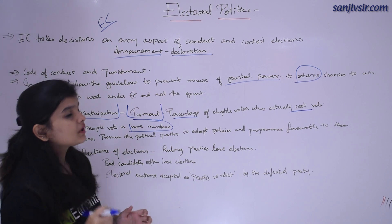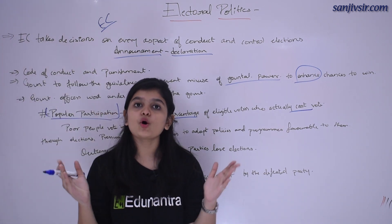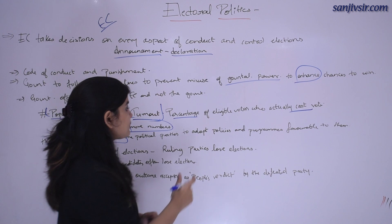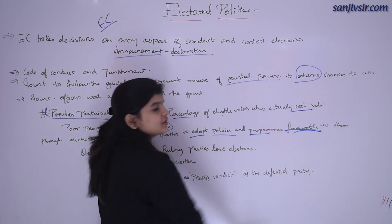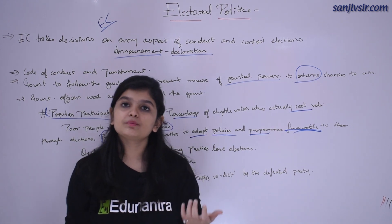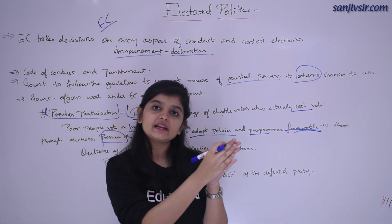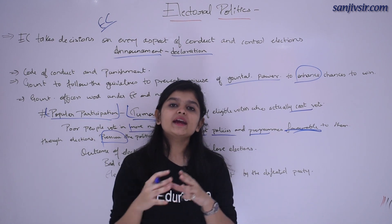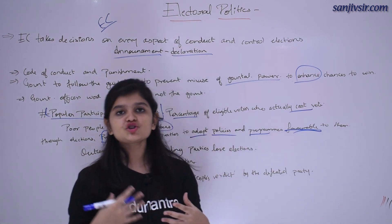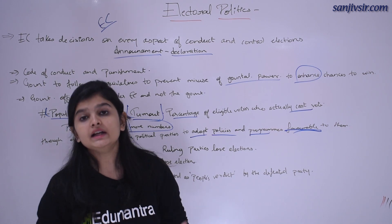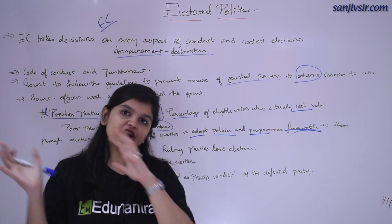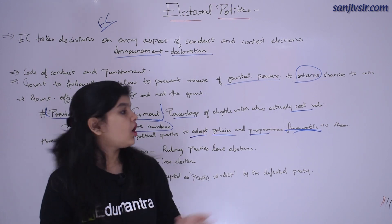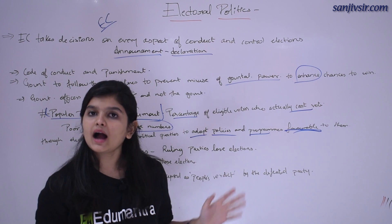Next: through elections, pressure the political parties to adopt policies and programs। Elections के वजह से political parties पे pressure आ जाता है, और उस pressure के अंडर वो adopt करते हैं वो policies और programs जो favorable होते हैं लोगों के लिए। जब हम vote करने जाते हैं, तब party leader को पता होता है कि हम उसको vote कर रहे हैं क्योंकि उसकी policy और program हमको पसंद आया। तो उस पे एक pressure बन जाता है कि वो उस policy को parliament में introduce करें।